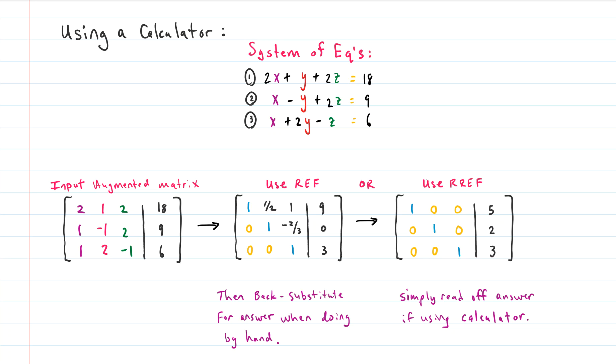So once we put that into a calculator, then we can use the REF function in the calculator to simply give us this row echelon form. And then we can take this row echelon form which has ones along the diagonal and zeros below the diagonal, and we can back substitute to find the answer by hand if we want.